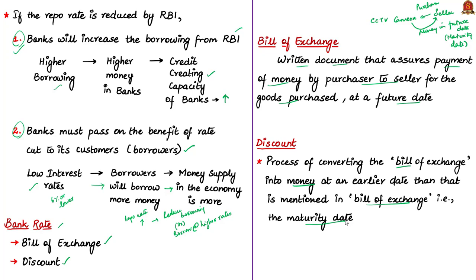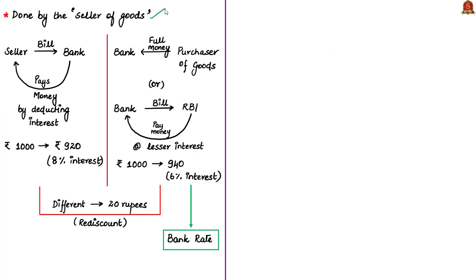The receiver of the bill — the seller — can approach the bank with the bill of exchange. The bank accepts the bill and pays the money after deducting some percentage as interest. For example, for a bill of exchange of ₹1000, the bank may pay ₹920 after deducting 8% interest. The bank will then receive the full amount of ₹1000 from the purchaser on the maturity date.